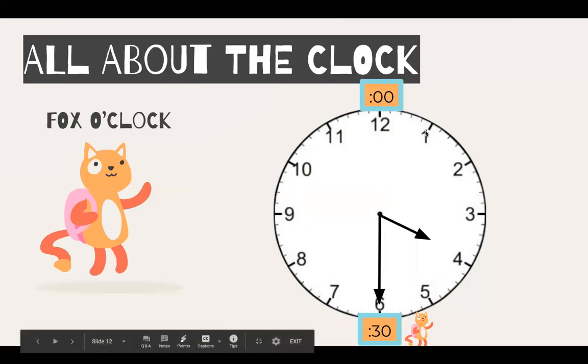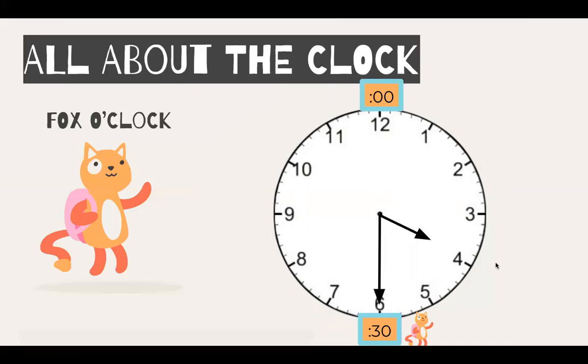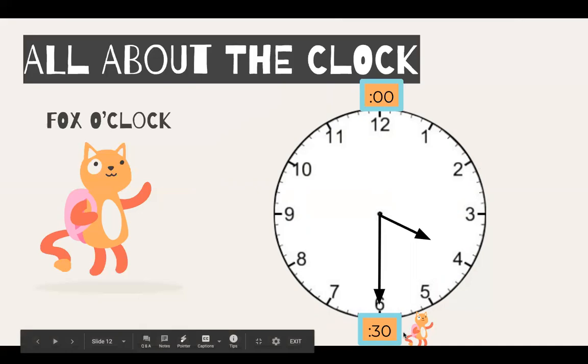Because if you remember, we count by five around the clock. Five, 10, 15, 20, 25, 30.